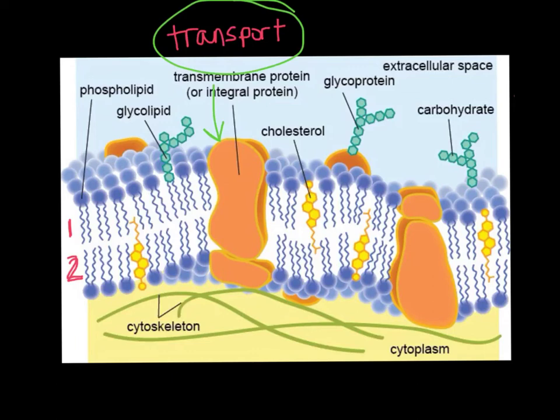Another thing we have are these carbohydrate chains. What they do is they're responsible for the identification of the cell — this way your cells can recognize which cells belong to your body and which cells belong to foreign things like bacteria and viruses that maybe should not be in your body.